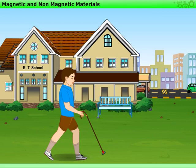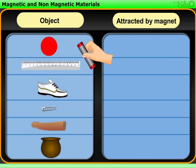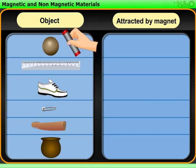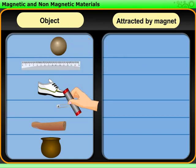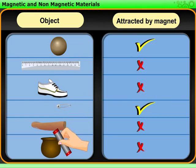Now, collect various objects of day-to-day use from your surroundings, such as an iron ball, a plastic scale, a shoe, a safety pin, a piece of wood, and a small earthen pot. Take a magnet and touch each of these objects individually. We observe that an iron ball and a safety pin get attracted to the magnet, whereas plastic scale, shoe, wood piece, and earthen pot do not. The objects attracted towards the magnet are made up of iron.